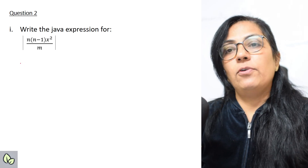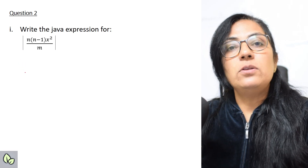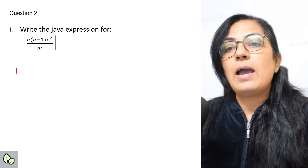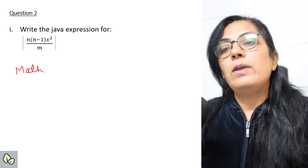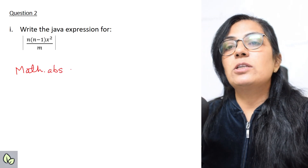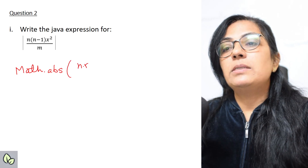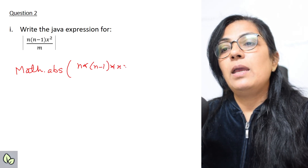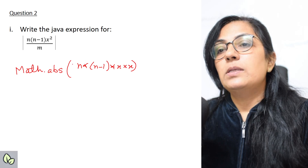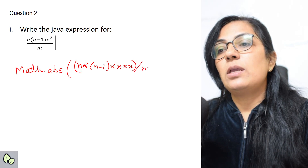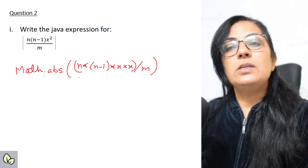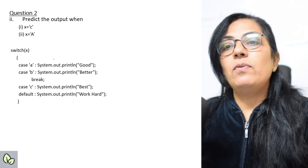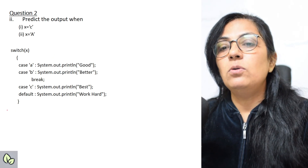Write the Java expression for the absolute value formula. The absolute value symbol in maths corresponds to the function Math.abs() in Java. Whenever you see that symbol, use Math.abs(). The expression is Math.abs(n * (n - 1) * x * x) / m. This question is included to illustrate the usage of Math.abs().